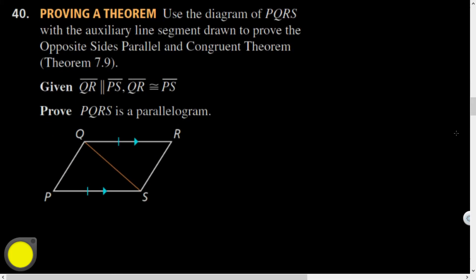All right. Use the diagram of PQRS. It's just a quadrilateral with the auxiliary line. Wow! That's so great. Segment drawn to prove the opposite side's parallel and congruent theorem. So, if I knew these were parallel and congruent and had the given information as true, what's something I could say that might help me out? QS, what? Yeah, yeah, yeah.